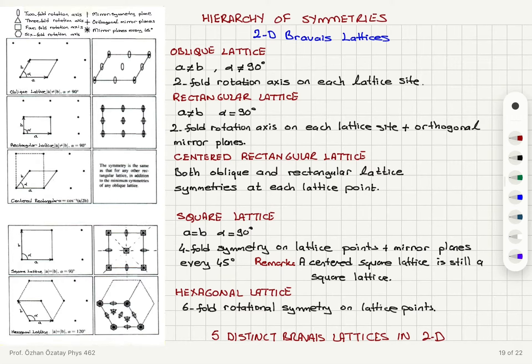In two dimensions we have five distinct types of Bravais lattices. Those are oblique lattice, rectangular lattice, and centered rectangular lattice.